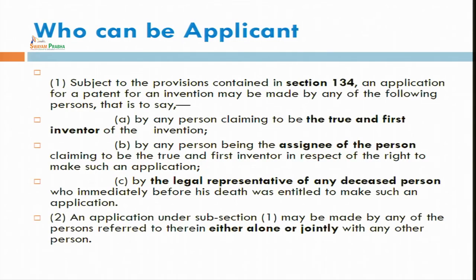Who can be an applicant? Under section 34, any person claiming to be the true and first inventor can apply. You must be the true or first inventor. The applicant can also be an assignee. The true and first inventor can himself file an application or he can sell or assign that invention to any other person.